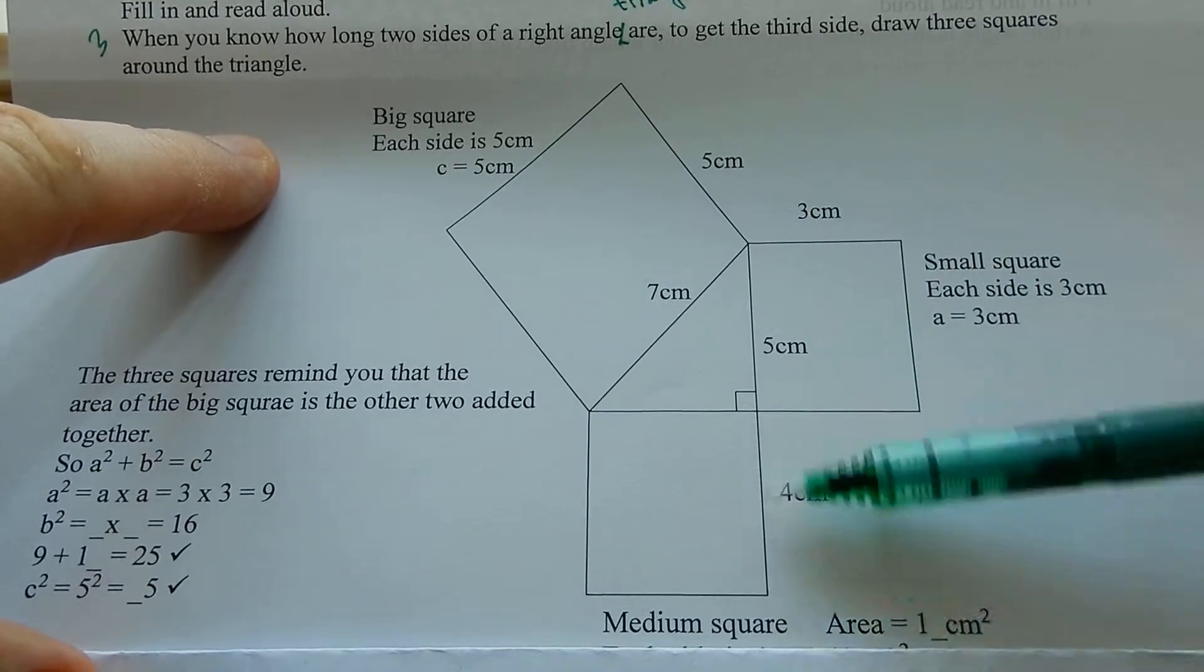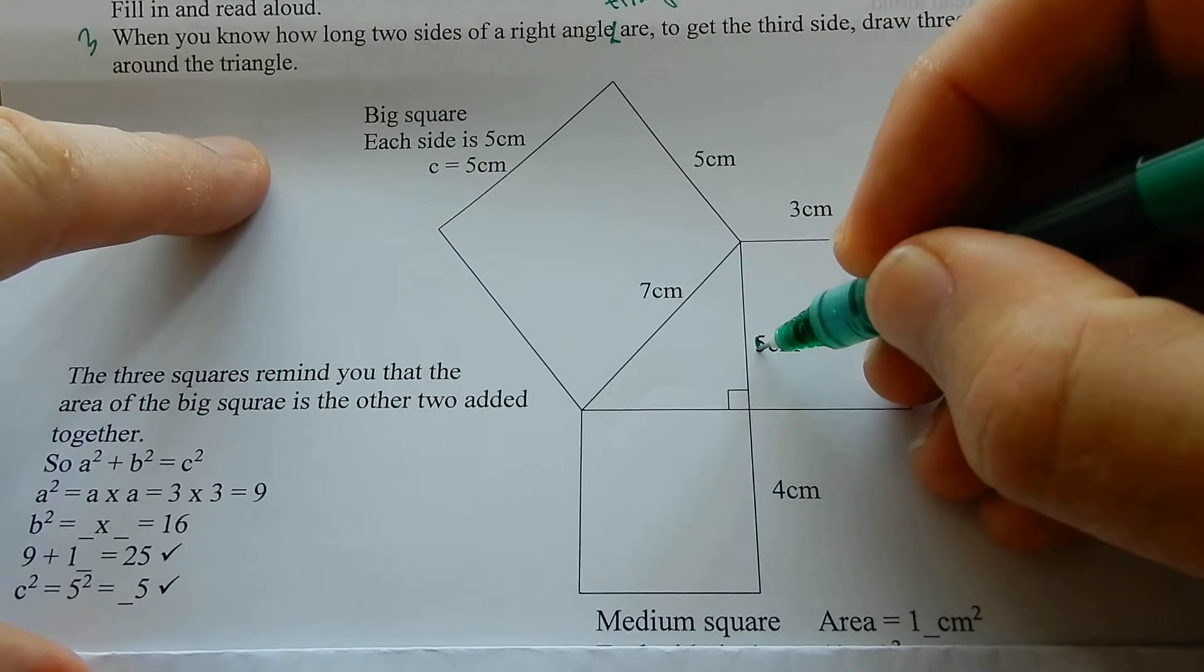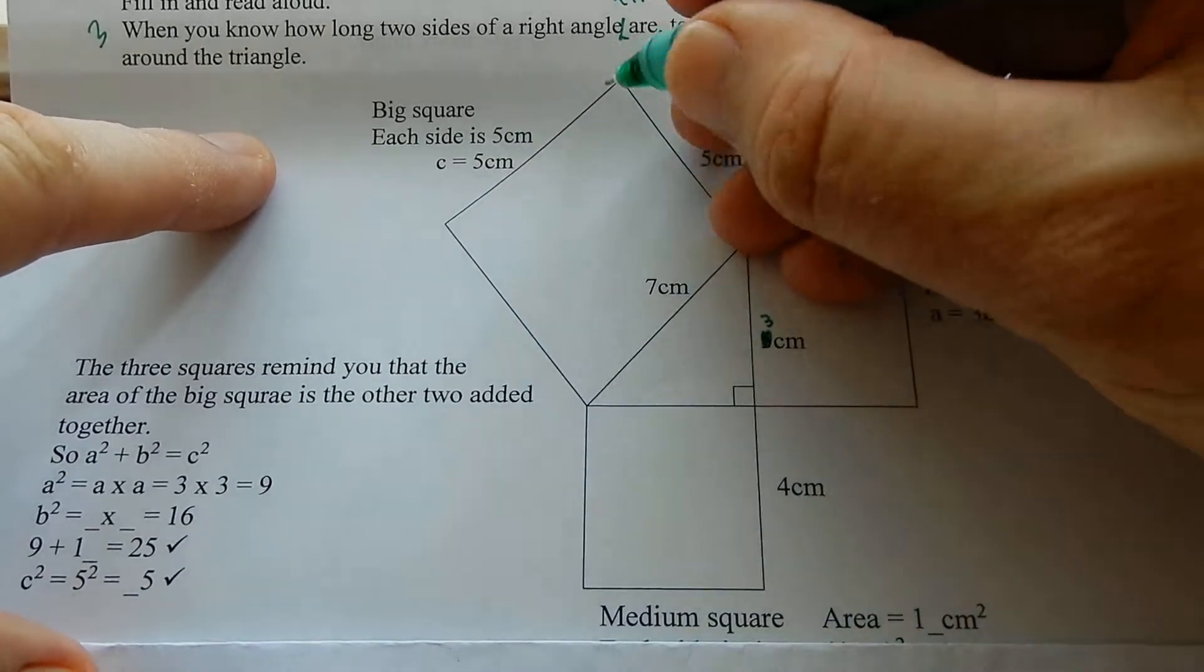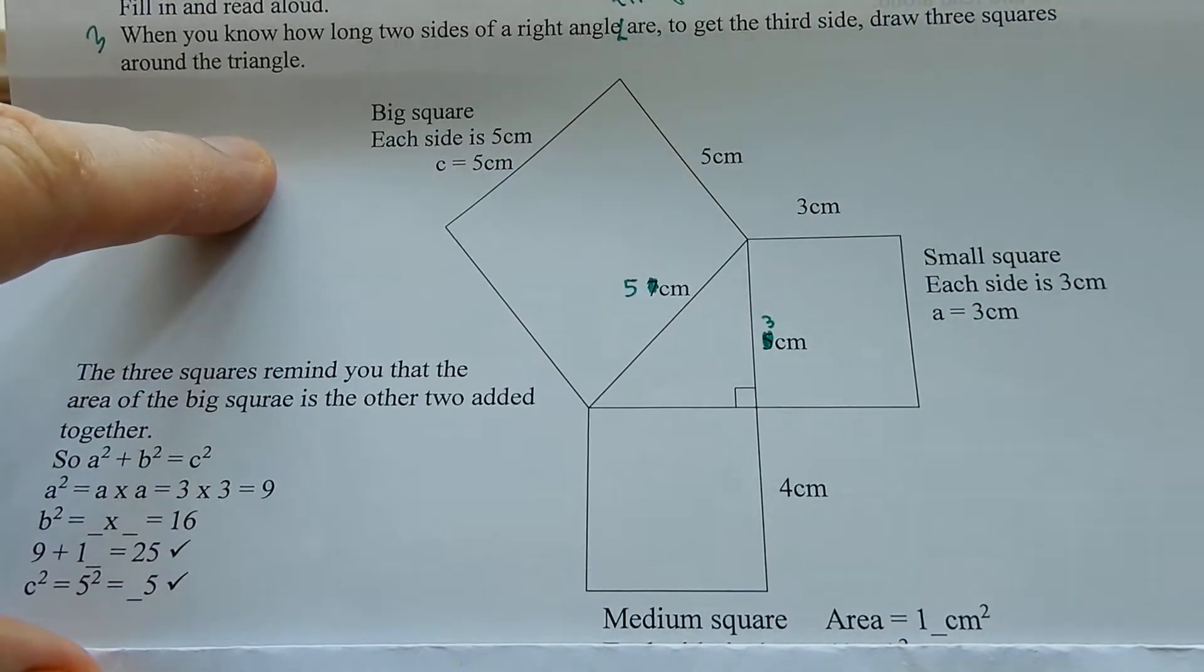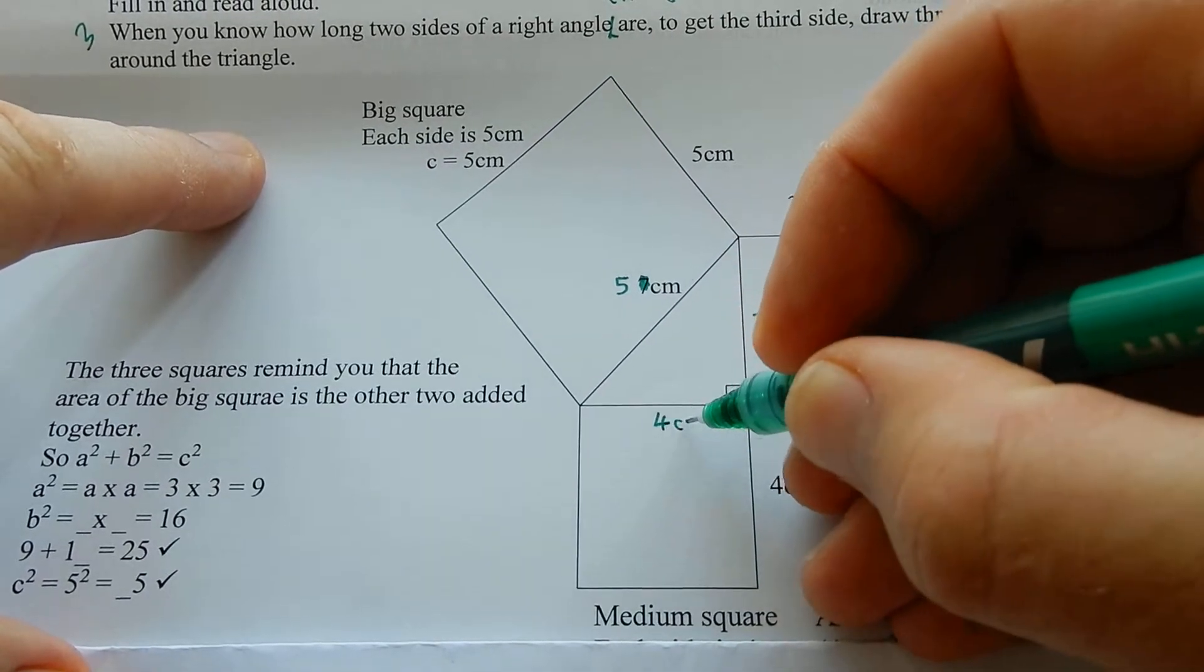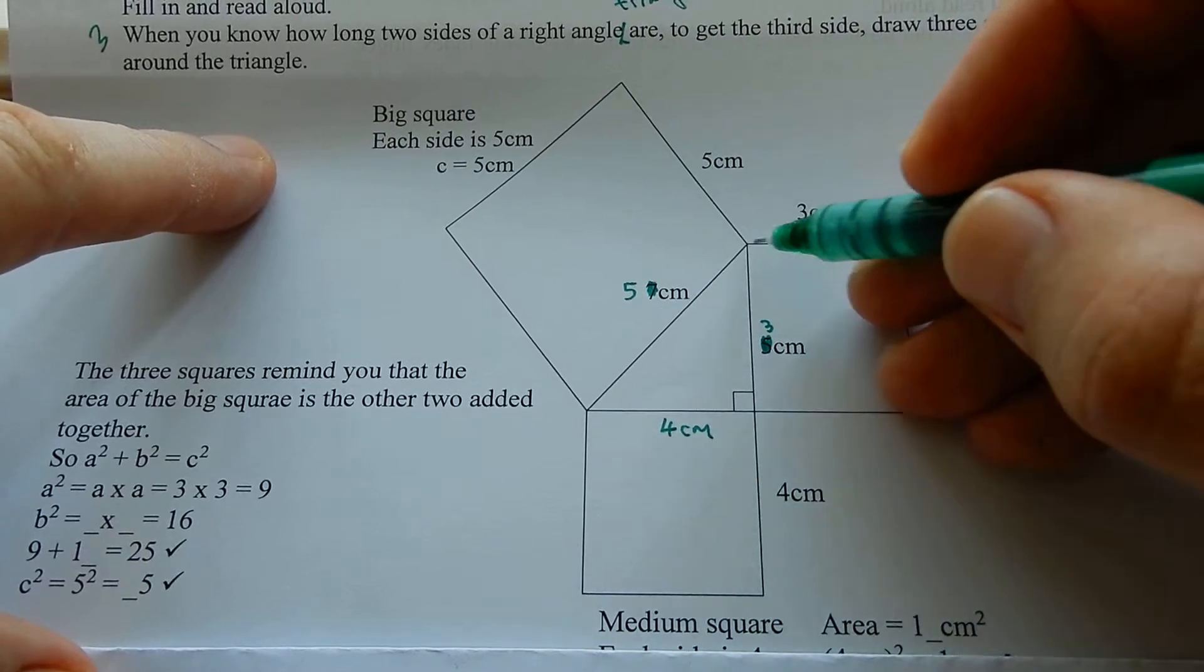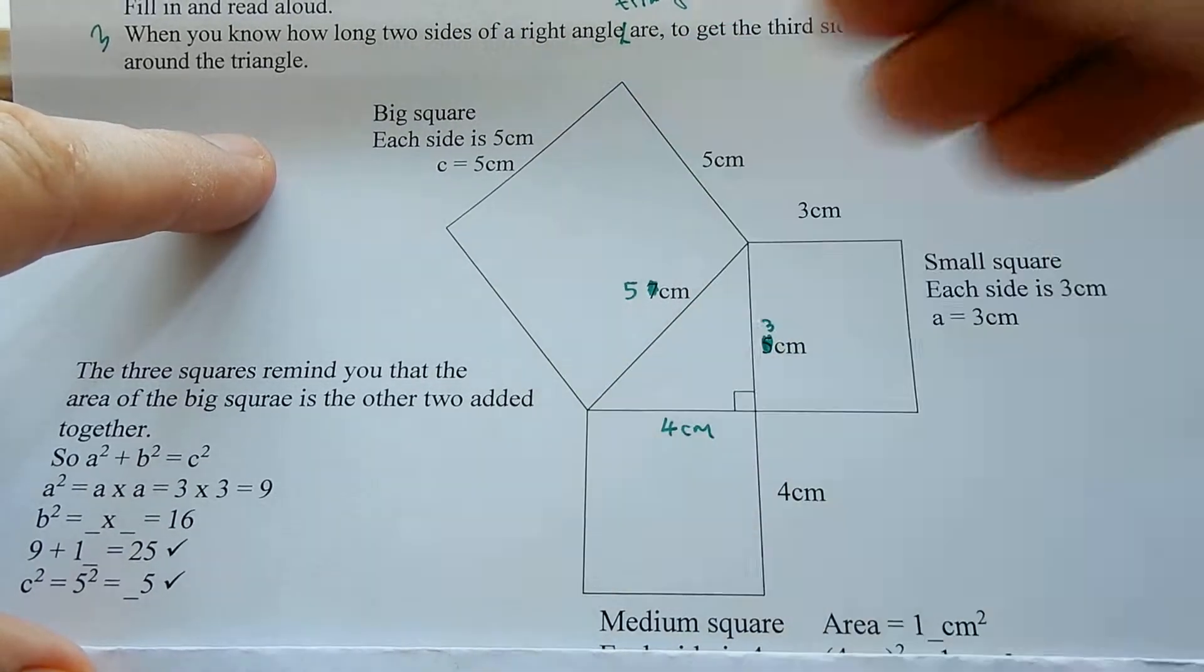This is three centimeters, this is four centimeters. That's three centimeters, because it's a square, that must also be, because it's a square, that must also be five centimeters. This is one of the famous squares, that's four centimeters, so that's four centimeters. This square is four centimeters by four centimeters. This square is three centimeters by three centimeters. This square is five centimeters by five centimeters.